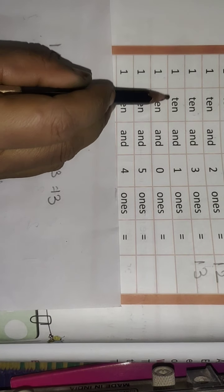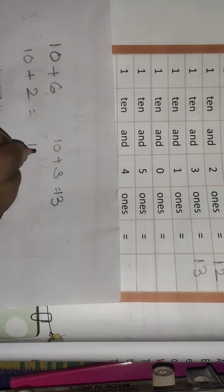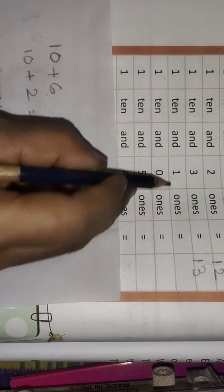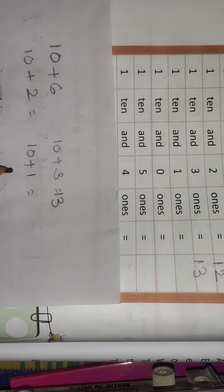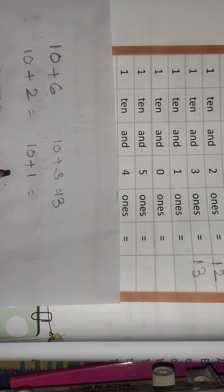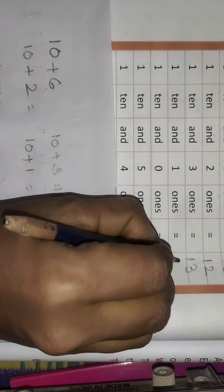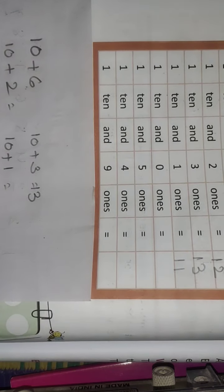Next — 1 ten and 1 one. 1 ten equals 10, 1 one equals 1. 10 plus 1 equals 11.